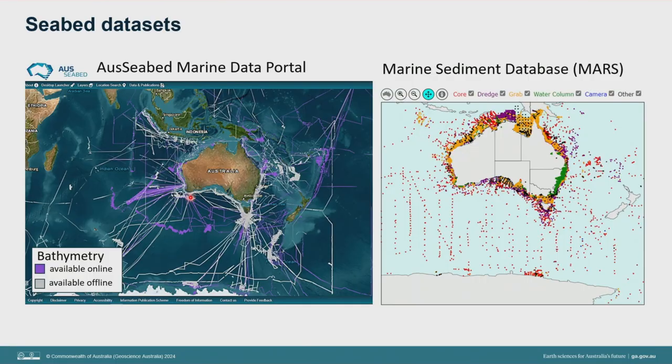The Geoscience Australia Marine Sediment Database shows a similar issue. The different coloured dots indicate different sorts of seabed samples that tell us whether the seabed is sand or mud. These are quite widely spaced in the deep marine but denser around the mainland — yet even those higher-density points are actually still quite widely spaced. If you identify a feature in the bathymetry data and go to the marine sediment database, you may find there is no sample over the top of the feature of interest. Our methodology needs to encompass this kind of uncertainty.